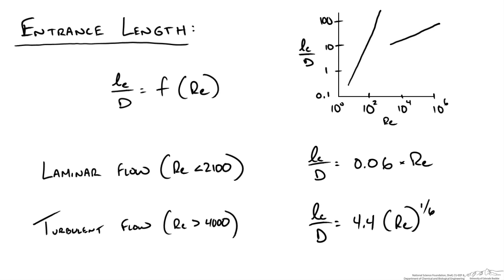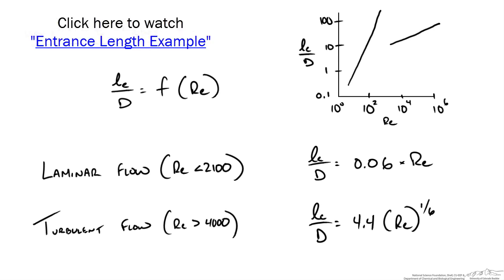So again the reason we bother to calculate the entrance length is because we want to know at what point in our pipe do we reach fully developed flow since most of the relationships we look at are for that kind of characteristic flow. In another screencast we will look at calculating the entrance length for different types of fluid flow.